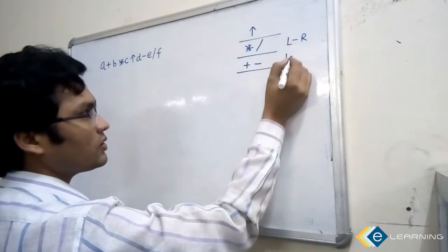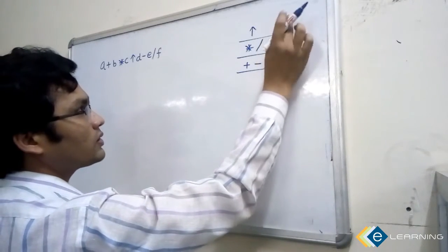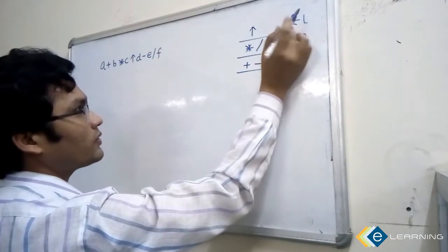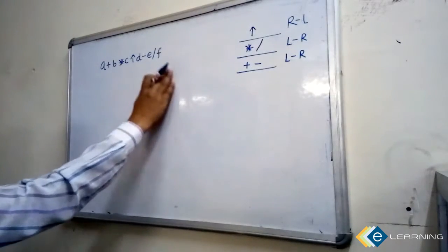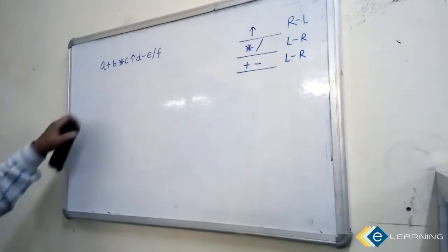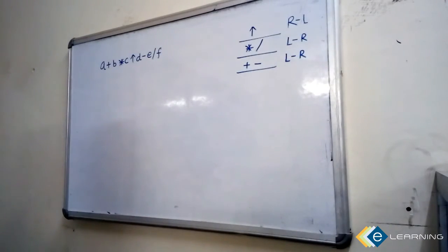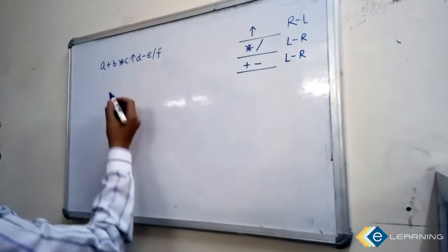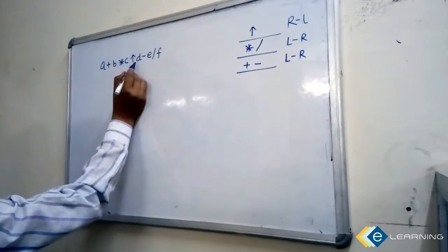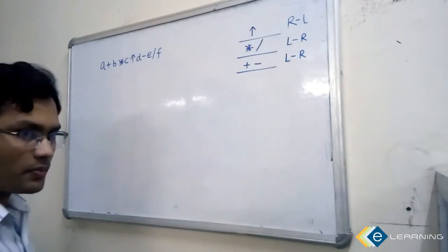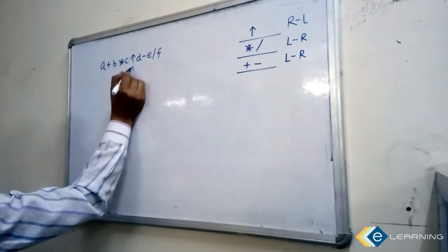This associativity is also left to right, but for power it is right to left. Now, number all the operators according to their precedence. You know which operator will evaluate first — the power operator, because the precedence of power is highest over all these operators. So make it number one.